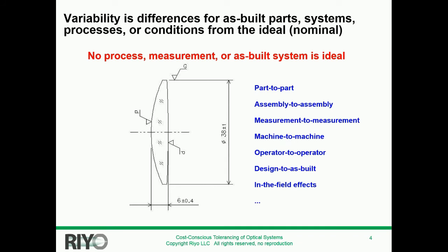If you put it together well but the parts aren't good enough, or it's not toleranced very well, then you might not get good performance. Variability can come from part to part, assembly to assembly for higher volume jobs, measurement to measurement — where you might have problems getting the same measurement with a system, which is variability in your metrology method — and also machine to machine, operator to operator, and differences from the design to what you end up building.